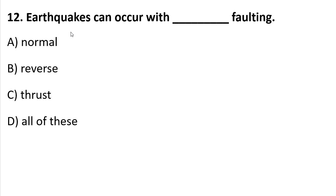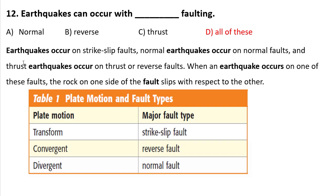Question 12: Earthquakes can occur with which type of faulting — normal, reverse, strike-slip, or all of these? As I told you, earthquakes happen due to plate motion. There are three types of plate motion: transform, convergent, and divergent. Transform motion creates strike-slip faults, convergent creates reverse faults, and divergent creates normal faults. So all of them — the answer will be C — all of the above.